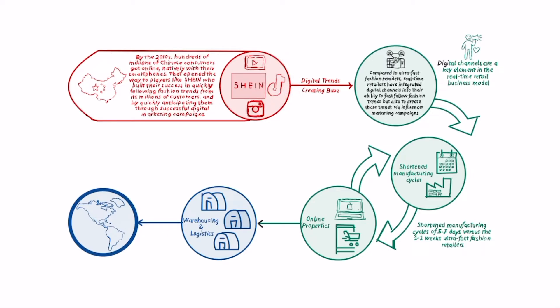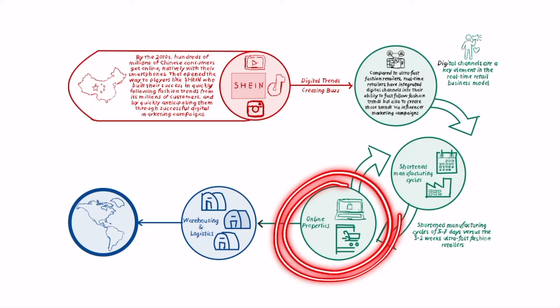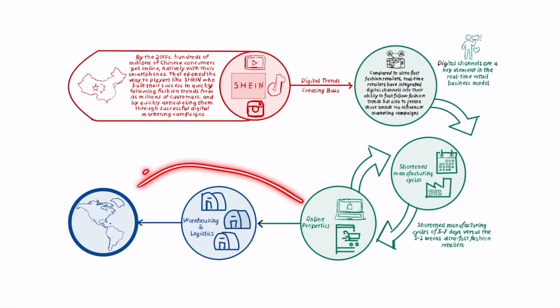And by leveraging on those digital trends, like a business model like Shein, shortened the manufacturing cycle from the one to two weeks of the ultra-fashion and the two to three weeks of the fast-fashion business model to five to seven days. It means that those digital trends can be turned into fashion items in five to seven days and made available on their online properties and therefore distributed globally.